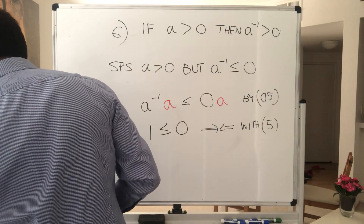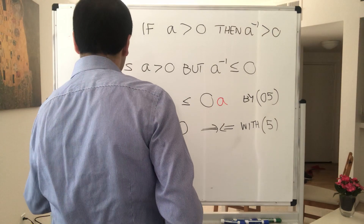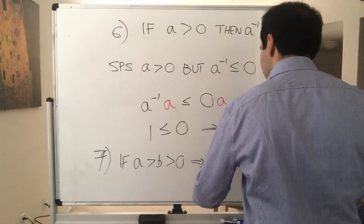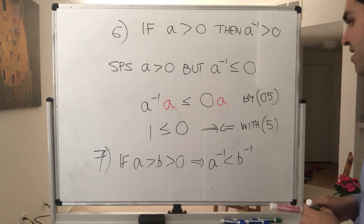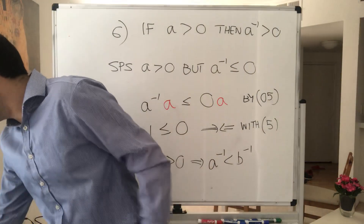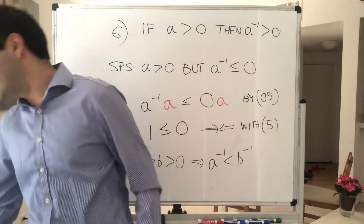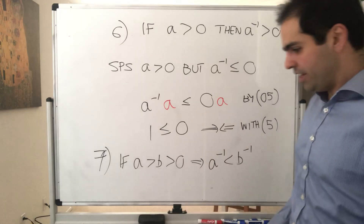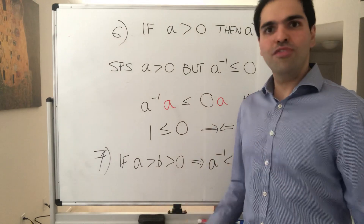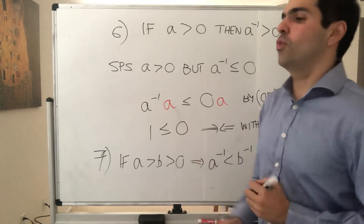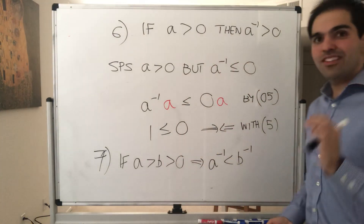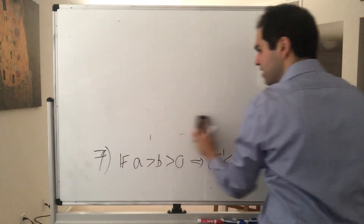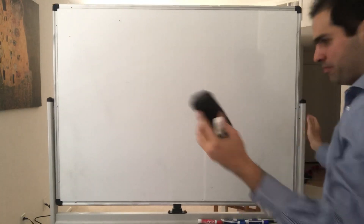Similarly, you can show that if A > B > 0, then taking multiplicative inverses reverses the order: A inverse is less than B inverse. I'll skip the proof — it's a nice exercise to do at home. So we've talked about fields and ordered fields. What makes R so special compared to the integers or the complex numbers is that R is an ordered field. But it still doesn't tell us what makes R better than the rational numbers.